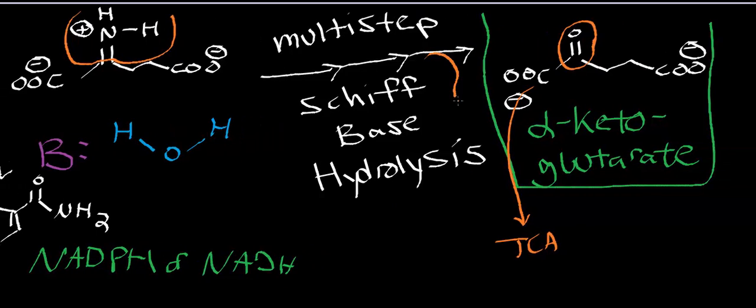In the final step, once you do the Schiff base hydrolysis, this is where you should see the production of ammonia, or as we know it at physiological pH, ammonium. The ammonia will be activated by carbamoyl phosphate synthetase one, which prepares it for entry into the urea cycle where it can be excreted as urea. Alpha-ketoglutarate goes into the TCA cycle.